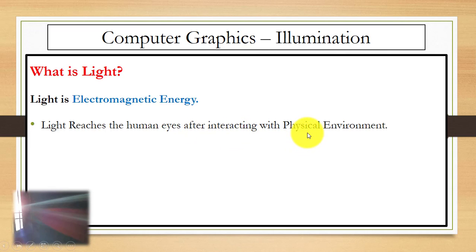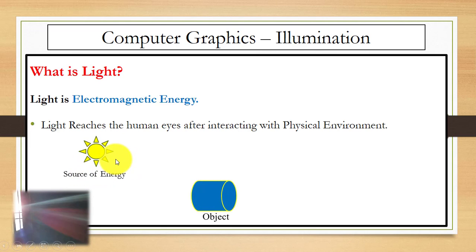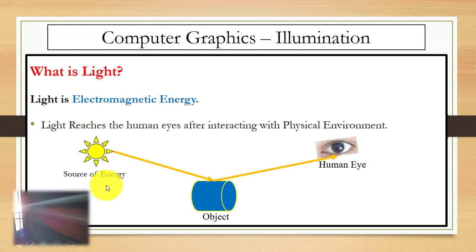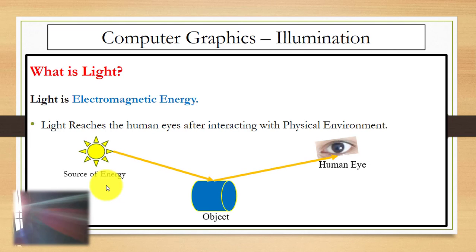For example, you can see here we have a source of energy — the sun — and we have an object and the human eye. Light reaches the human eye after interacting with the physical environment. When light falls on the object, the human eyes can see the object. So light reaches human eyes by interacting with the physical environment, and light is simply electromagnetic energy.